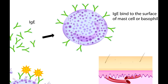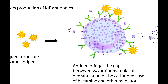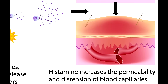When the person is exposed to the same allergen again in a subsequent exposure, that allergen binds with the IgE antibodies on the mast cell or basophil. This triggers the cell to release histamine and other mediators, producing the reaction. Histamine increases capillary permeability and causes major vasodilation.